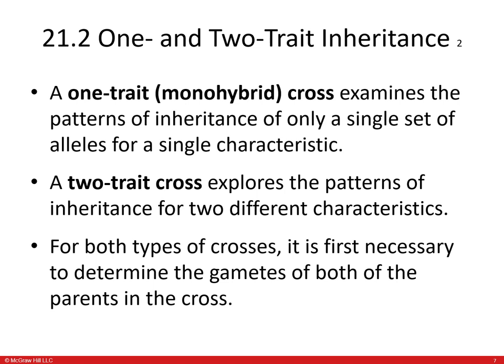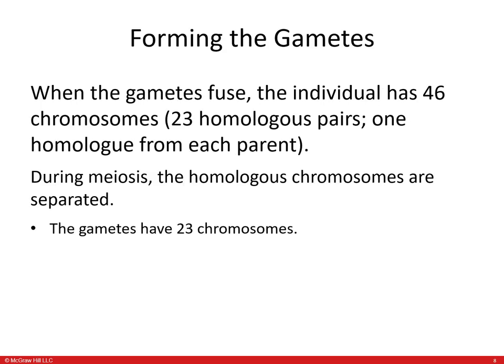For both types of crosses, it is first necessary to determine the gametes of both parents. Remember, the point of meiosis is to make cells with half the number of chromosomes of the parent cell. When two gametes fuse together, they give rise to a cell with the correct number of chromosomes — in this case 23 pairs. During meiosis, homologous chromosomes are separated and each gamete only has 23 chromosomes, so when the gametes fuse they make a cell with exactly the right number.